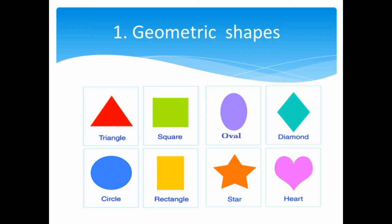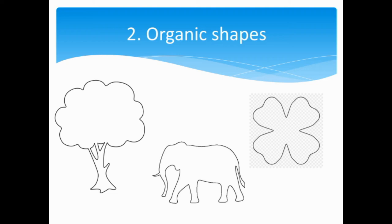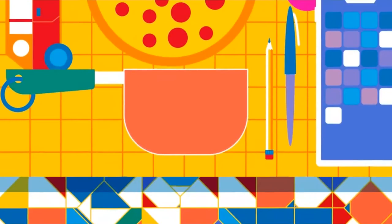Now, let's proceed with number two, organic shapes. Organic shapes are the shapes of living things. Their sizes and details are always different, but the general shapes are those of a tree, a human, an animal, or a flower, and many things that you can found in our nature.